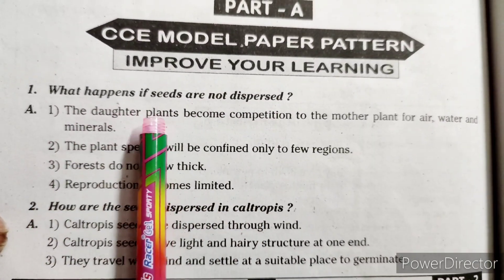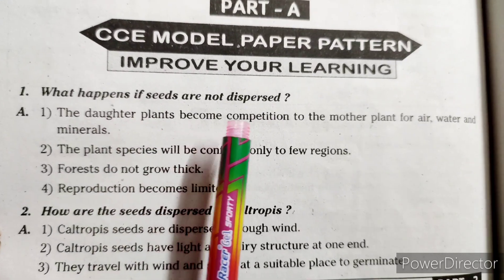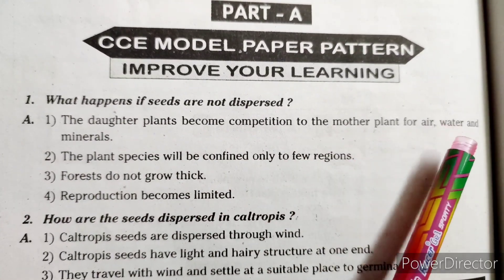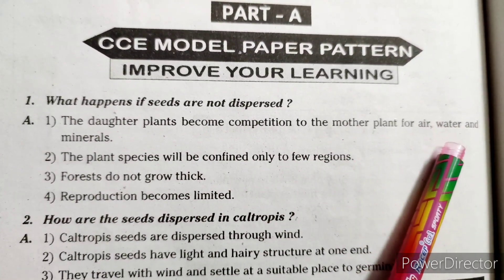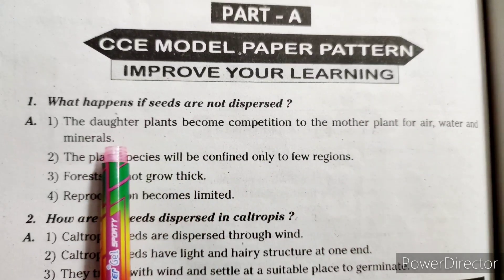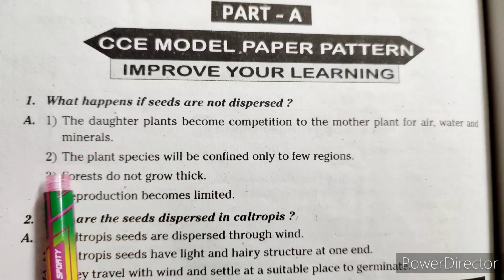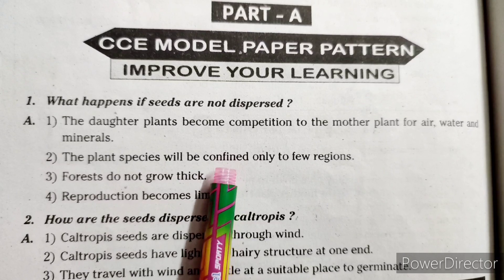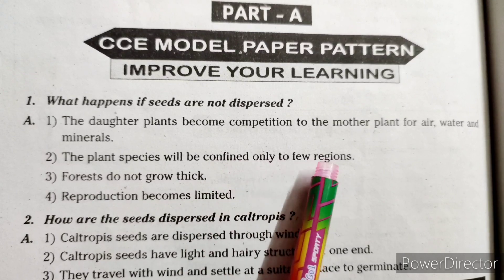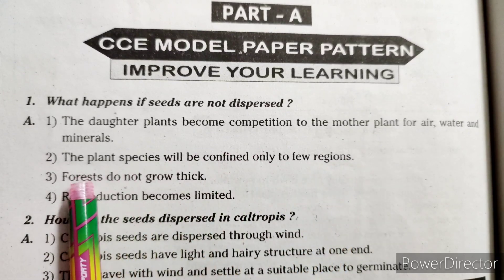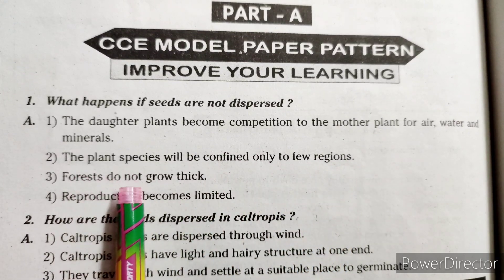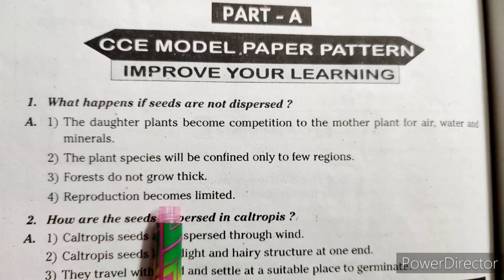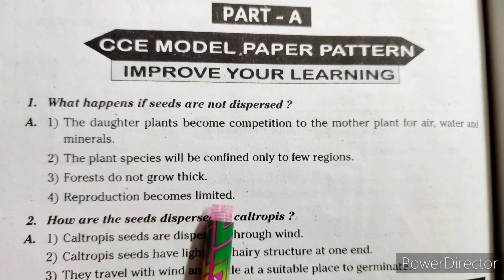The daughter plants become competition to the mother plant for air, water and minerals. The plant species will be confined only to a few regions. Forests do not grow thick. Reproduction becomes limited.